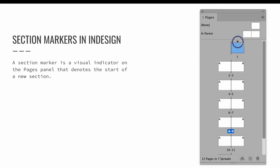Before we add new sections, let's take a look at the pages panel. There is a small triangle above page one — this is a section marker. It is a visual indicator to the InDesign user that a section exists. You will see a new triangle above the page that starts each new section. Remember this so that if something happens to your numbering or you get confused and have to figure out how to fix an error, you know where to look. When in doubt, get rid of all of your extra sections and just start over.